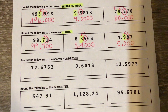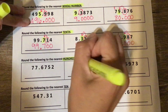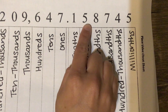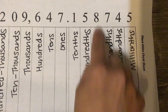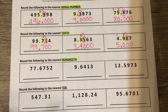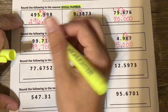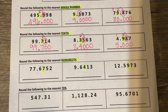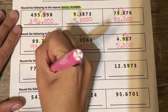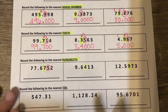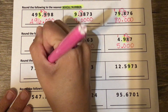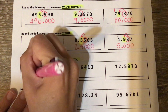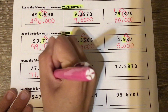Next, we are rounding to the nearest hundredth. The hundredth is the second digit after the decimal, and we'll need to look at the thousandths place to round. I highlight the hundredths place — counting one, two after the decimal in each number — and circle the digit to the right. For the first one, five tells us to round up, so the seven rounds up to an eight. Everything to the left stays the same, and everything to the right becomes zero.